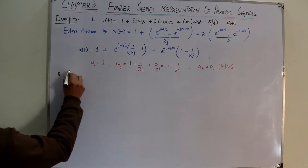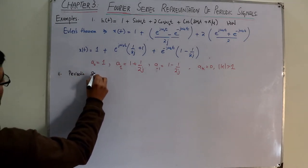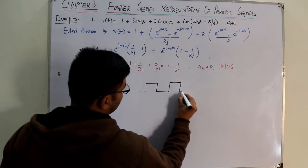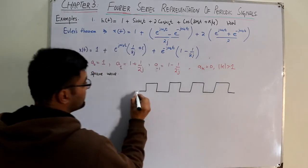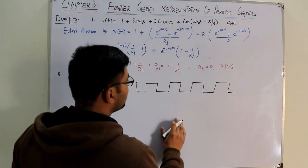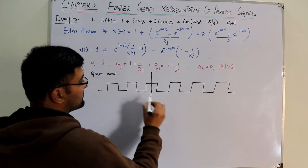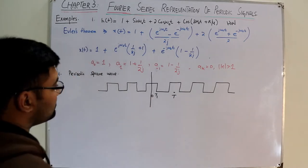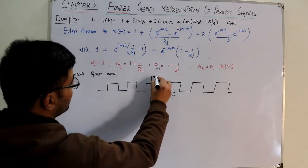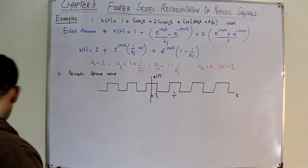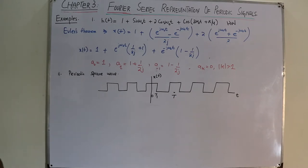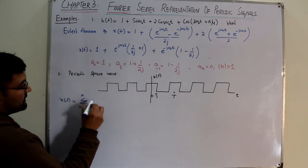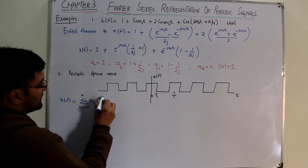The next example is the periodic square wave, also known as the clock pulse. The signal is symmetric about the origin, with period T and half-pulse-width T₁. We need to find the Fourier coefficients using aₖ = (1/T) ∫ x(t) e^(-jkω₀t) dt over one period.